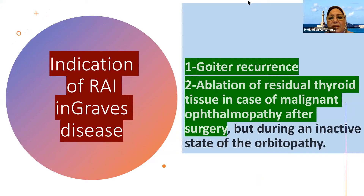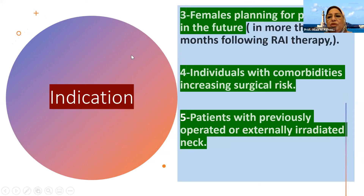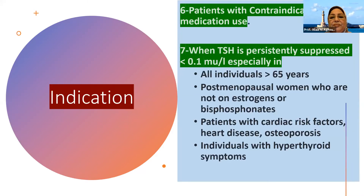The indications include goiter recurrence, ablation of residual thyroid tissue in cases of malignant ophthalmopathy after surgery but during an inactive state of orbitopathy, females planning for pregnancy in more than four to six months following radioactive iodine therapy, individuals with comorbidities increasing surgical risk, patients with a previously operated or externally irradiated neck, patients with contraindications to antithyroid drugs, and when TSH is suppressed below 0.1 microunit per liter—especially in individuals above 65 years, postmenopausal women not on estrogen or bisphosphonates, patients with cardiovascular risk factors, heart disease, or osteoporosis, and individuals with hyperthyroid symptoms.